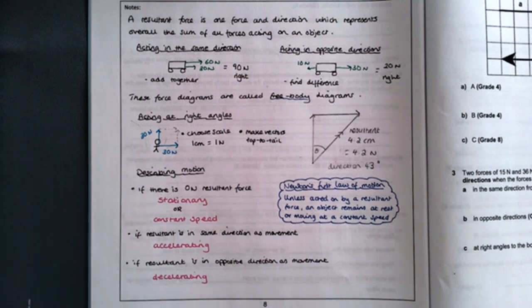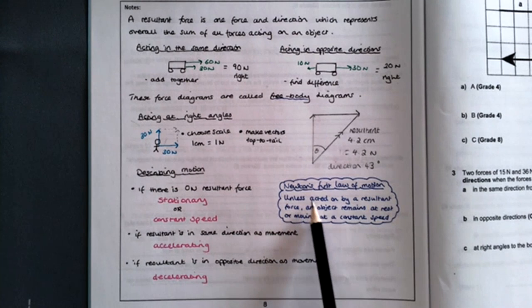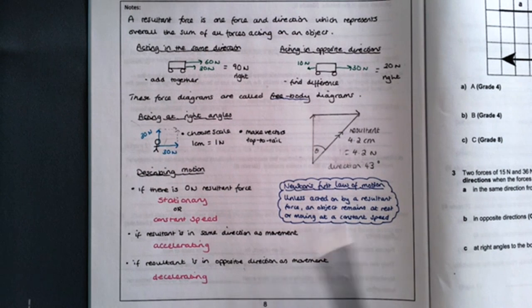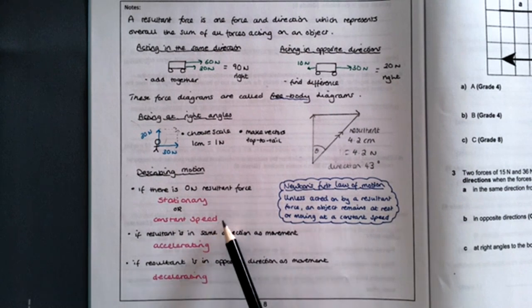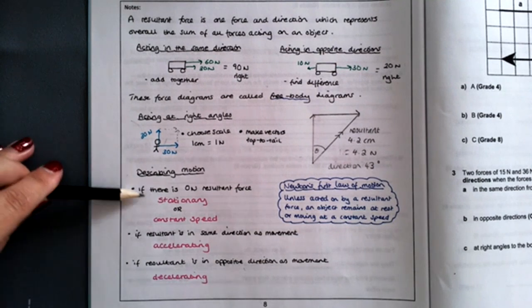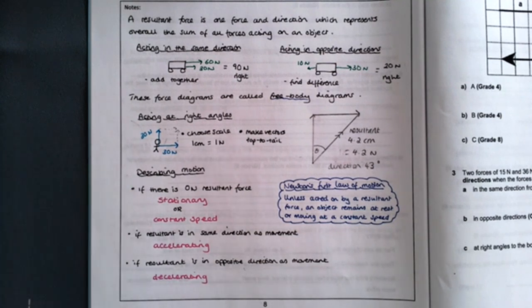All of these phrases stem from Newton's first law of motion, which tells us that unless an object is acted on by a resultant force—which is these two scenarios—an object remains at rest, stationary, or moving at a constant speed. So if the question says 'describe the motion of the object,' only these four phrases are allowed.